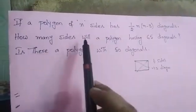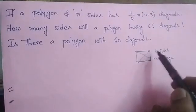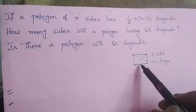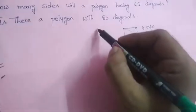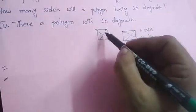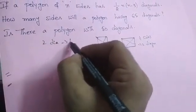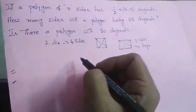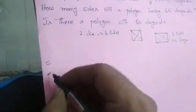If a polygon has 65 diagonals, we need to find how many sides it has. For example, with two diagonals we get four sides — a square. As the number of diagonals increases, the number of sides increases. Let's start the solution to calculate the number of sides.